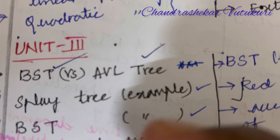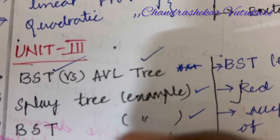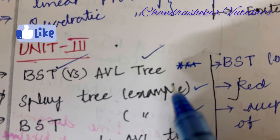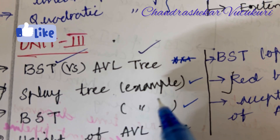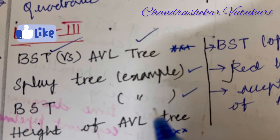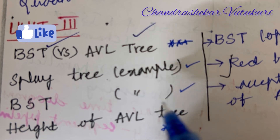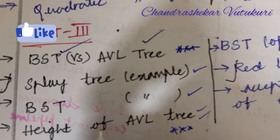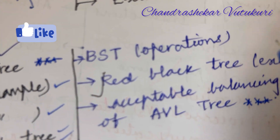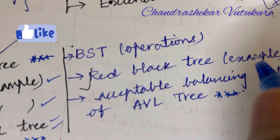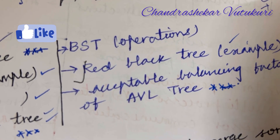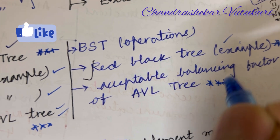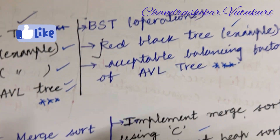For Unit 3: BST versus AVL tree — their differences and definitions — splay tree with an example, BST tree as an example, and the height of an AVL tree are the topmost questions. BST operations and red-black trees may appear as long or short questions. The acceptable balancing factor of an AVL tree is also important.